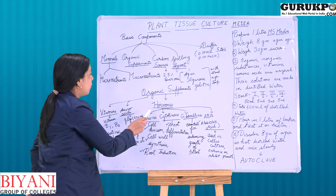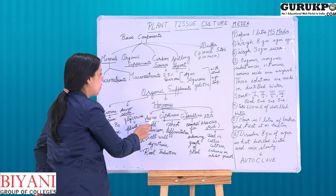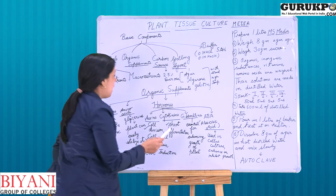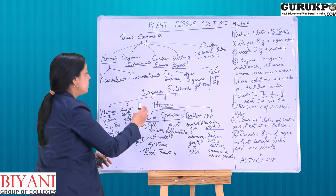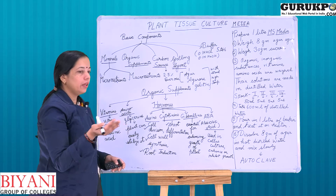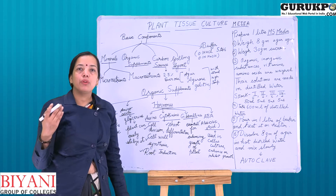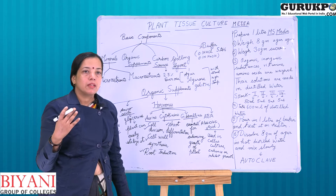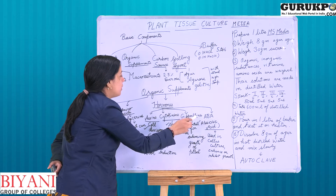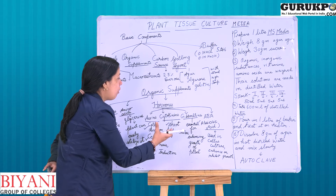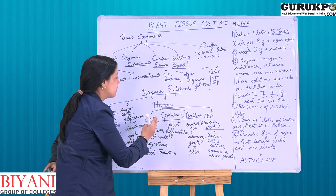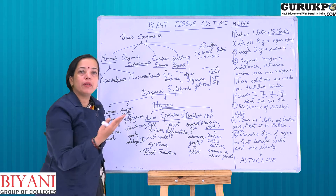The four basic hormones included in plant tissue culture media are auxins, cytokinins, gibberellins, and abscisic acid. According to the concentration of these hormones, the growth in plant tissue culture occurs. Shoot differentiation, root differentiation, morphogenesis, and plant growth all vary according to the concentration of hormones utilized, and different concentrations are suitable for different plants.